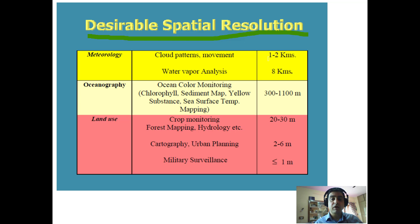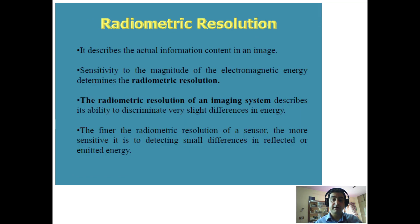Desirable spatial resolution varies by application: for meteorology and cloud patterns, one to two kilometers is sufficient; for oceanography, 300 to 1100 meters; for land use, crop monitoring, forest mapping, and hydrology, 20 to 30 meters; for cartography and urban planning, two to six meters; and for military surveillance requiring high accuracy, less than one meter.